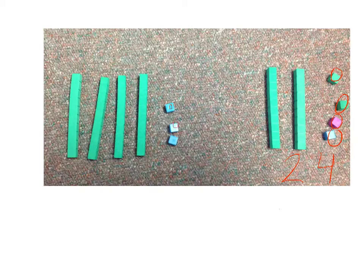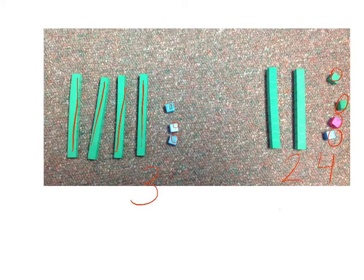If we come over here, we have three units, which would give us three ones. And we have one, two, three, four tens, which would give us a value of 40. 40 and three ones would give us the number 43.